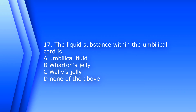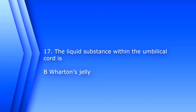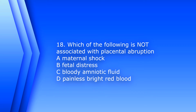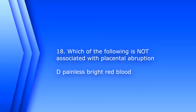Question 17. The liquid substance within the umbilical cord is: A. Umbilical fluid. B. Wharton's jelly. C. Wally's jelly. Or D. None of the above. The answer is B. Wharton's jelly. Question 18. Which of the following is not associated with placental abruption? A. Maternal shock. B. Fetal distress. C. Bloody amniotic fluid. Or D. Painless bright red blood. The answer is D. Painless bright red blood. That is present usually during placenta previa.